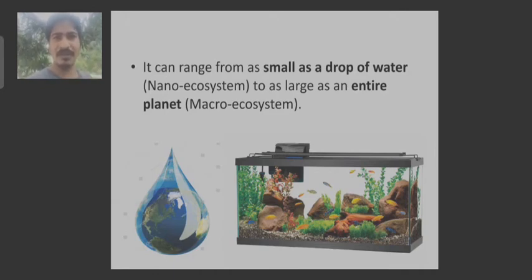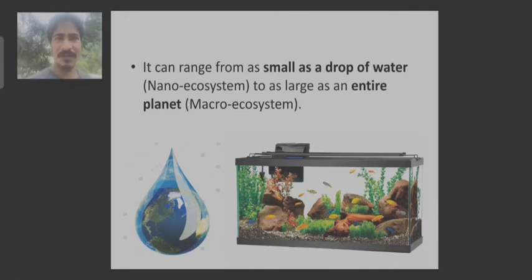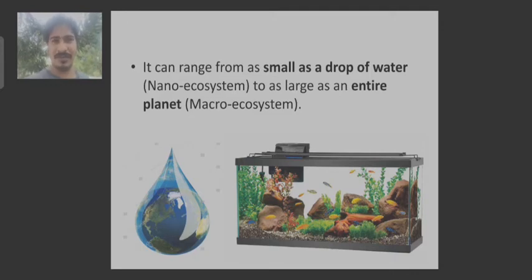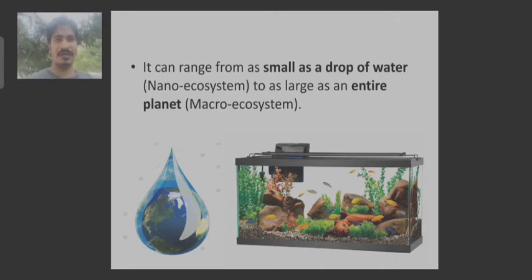They are interacting among themselves. The microorganisms are interacting with the abiotic components for sustainability, so in this regard it also forms an ecosystem. On the other hand, it may be as large as the entire planet. The earth itself is an ecosystem because here you can see both living organisms as well as non-living substances, and they are interacting with each other for survivability and sustainability.